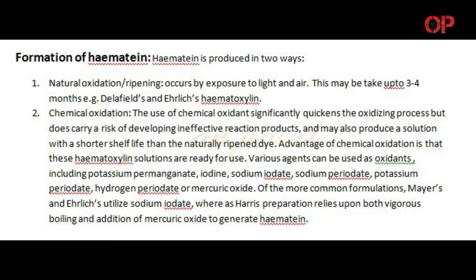The advantage of chemical oxidation is that these hematoxylin solutions are ready for use. Various agents can be used as oxidants, including potassium permanganate, iodine, sodium iodate, sodium periodate, potassium periodate, hydrogen periodate, or mercuric oxide. Of the more common formulations, Mayer's and Ehrlich's utilize sodium iodate, whereas Harris preparation relies upon both vigorous boiling and addition of mercuric oxide to generate hematein.